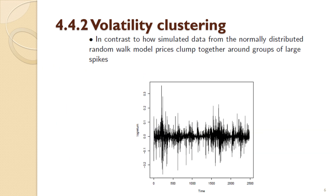To graphically illustrate volatility clustering, we have a time series plot of the log return series for the Bitcoin data. What you're seeing is something qualitatively very different compared to a simulation from a normally distributed random walk. The prices clump together around large spikes in volatility — this is inevitably much richer and riskier behavior than the random walk model can describe. This clustering around big spikes is the reason for the name volatility clustering.